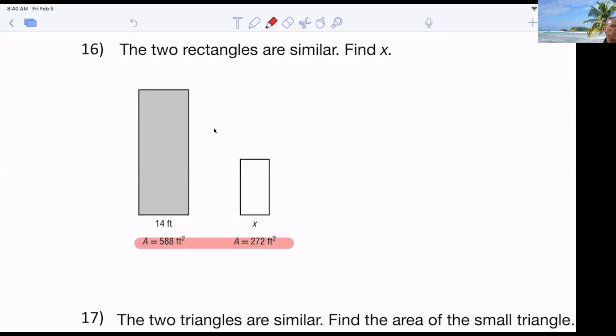Just take out your handy-dandy calculator and just do 588 divided by 272. And tell me what that is. And then hit math, enter, enter. 147 over what? 68. Okay. So now, that's the ratio of the areas. Now, I need to find the ratio of the sides. So the ratio of the areas, remember, is a squared to b squared. So just take the square root of that.